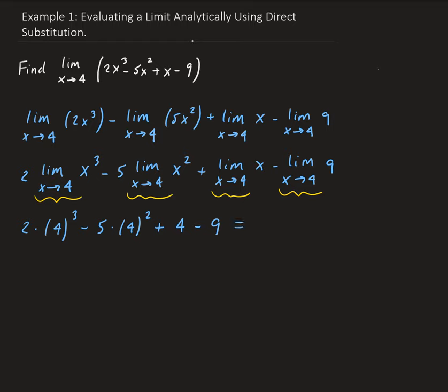So we have 2 times 4 cubed minus 5 times 4 squared plus 4 minus 9. That will give us a value of 43.